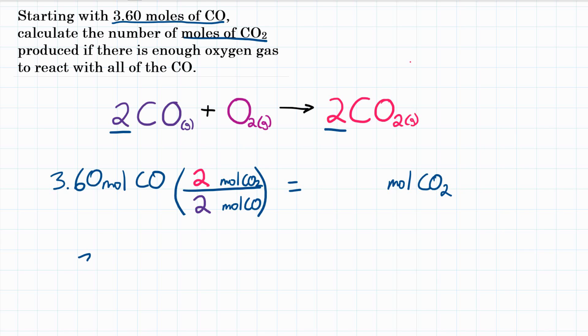So when we do the math, we're going to do 3.60 times the top of our conversion factor, 2, divided by the bottom of our conversion factor, also 2. And we're going to be left with exactly what we started with, 3.60 moles of CO2.